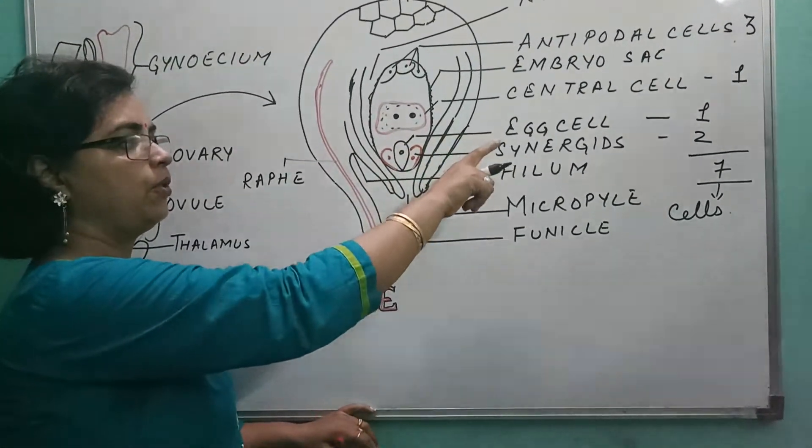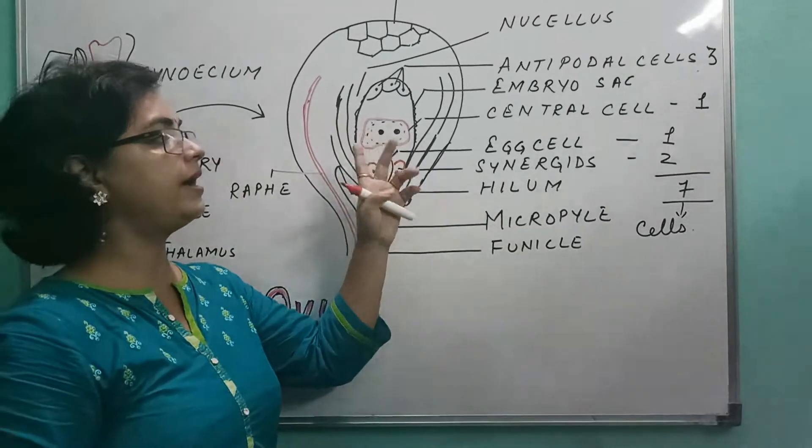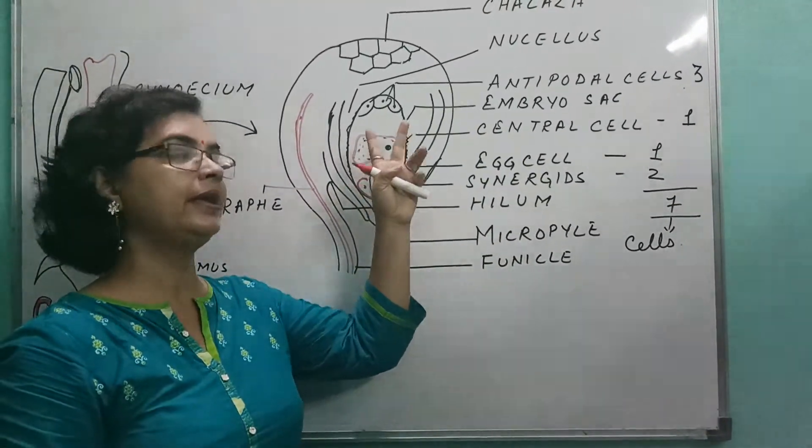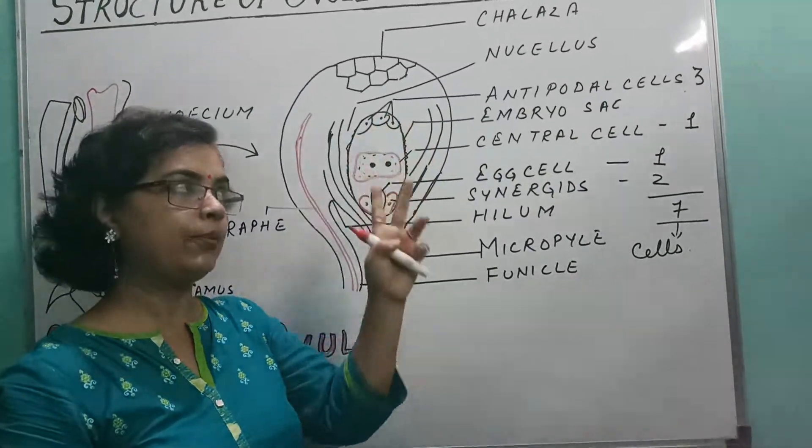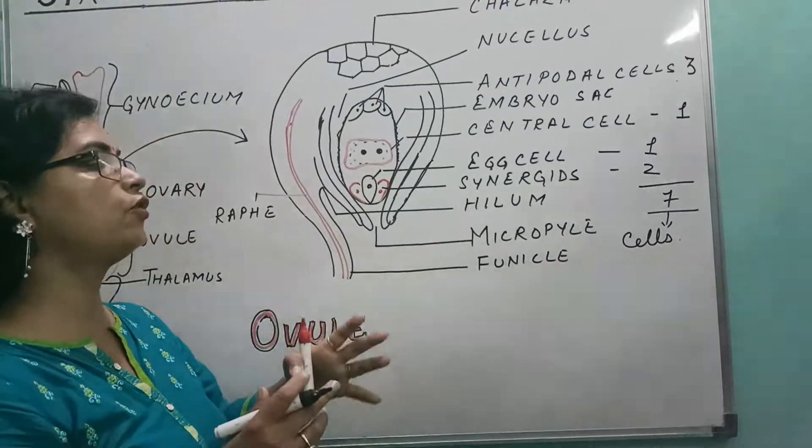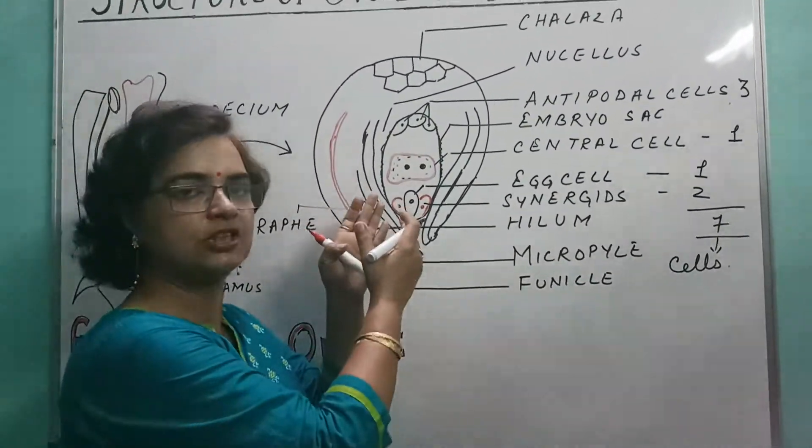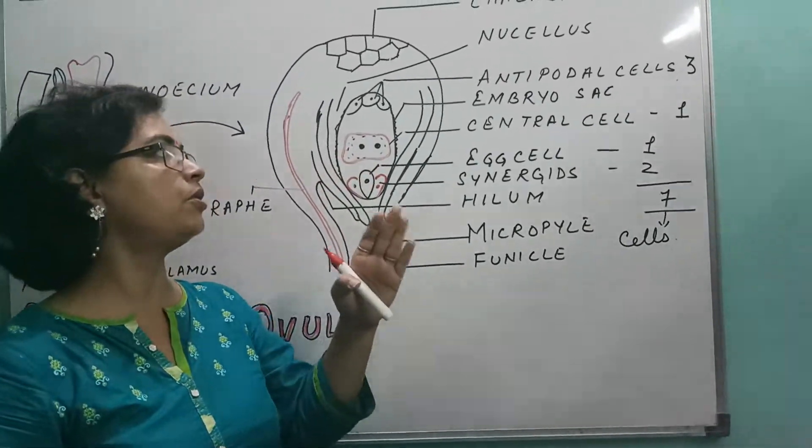Egg cell, haploid. Synergids, haploid. 2 nuclei, when they are not fused, then they are N and N, that is haploid. And of course the 3 antipodals are also haploid. Haploid means N. That means the number of chromosomes are reduced to half in the cells, and the cells which are there inside, they are formed after the meiosis or meiotic division.